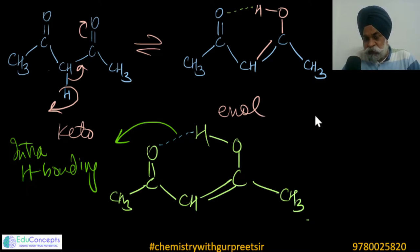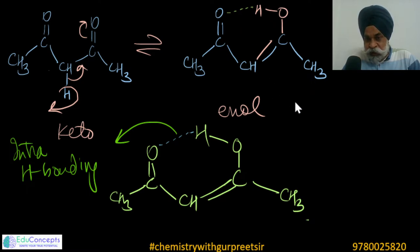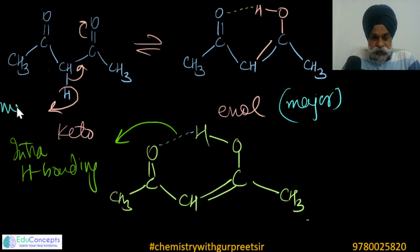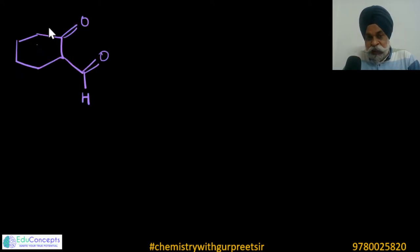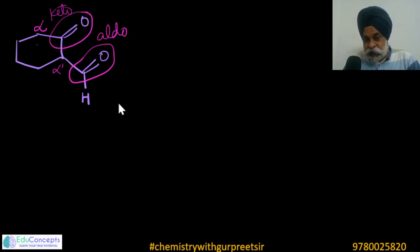Many books state the enol content in acetyl acetone is approximately 76%, with around 24% keto. In exams, exact percentages are generally not required; you only need to recognize which is major and which is minor. Taking another example: here there is one alpha and one alpha-dash carbon. The alpha-dash is a sort of activated methylene because carbonyl groups flank both sides — one from the keto part and one from the aldehyde part — giving two types of possible enol.